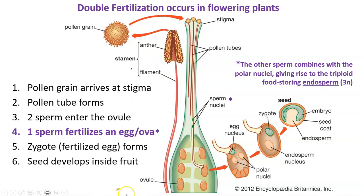One of the sperm is going to fertilize the egg or ova. The other sperm is going to combine with the polar nuclei, and that's going to give rise to a structure called the endosperm, which stores food for the developing embryo, at least in the early stages of development.